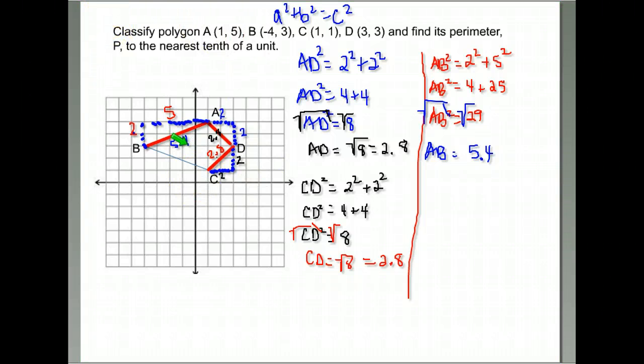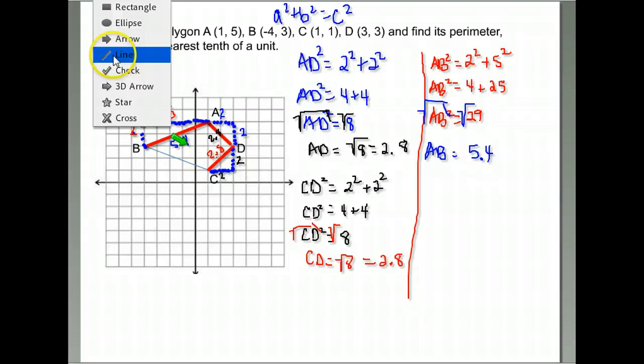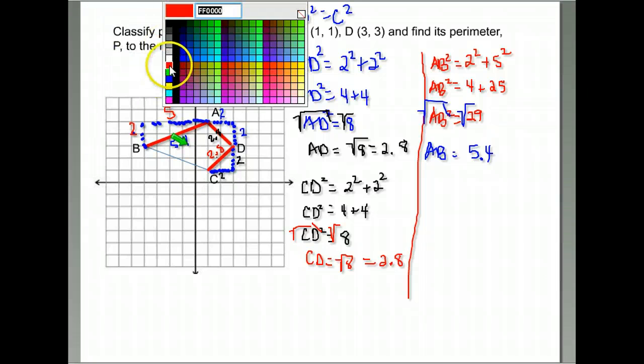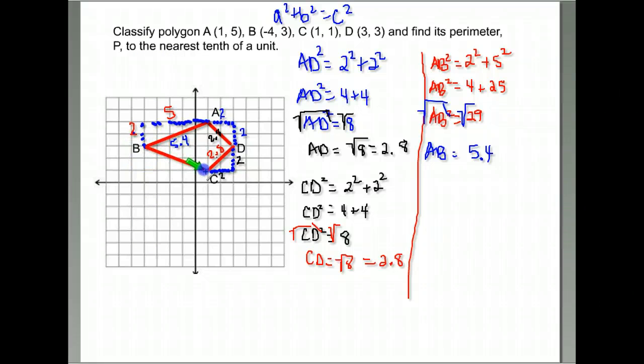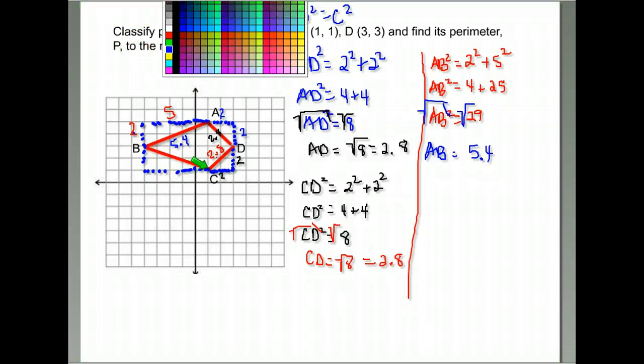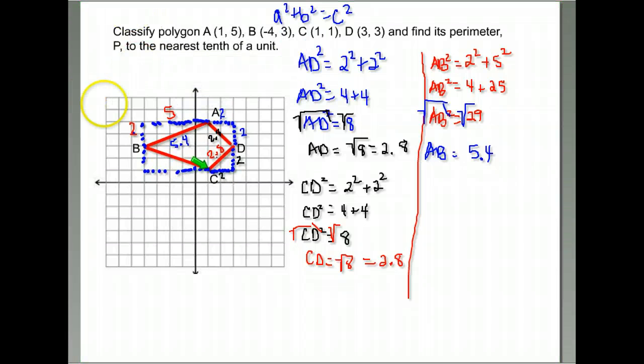And this is, again, you can use the distance formula, but in this example, I'm showing you how to solve this problem using the Pythagorean theorem. So there is yet another side, BC. And yet again, I can use the grid to form a right triangle from B to C. Find the length of each of those just by counting.